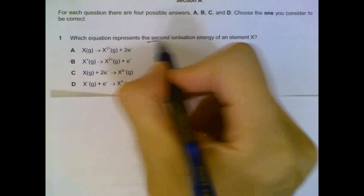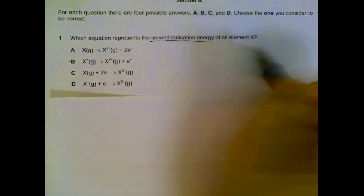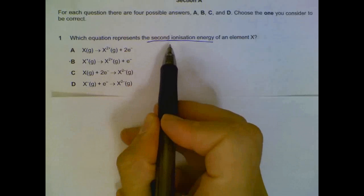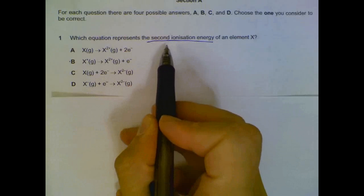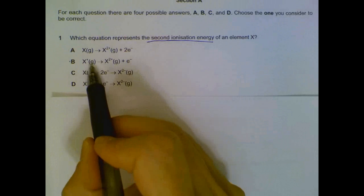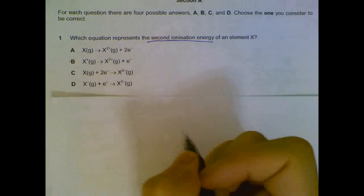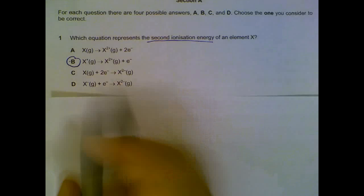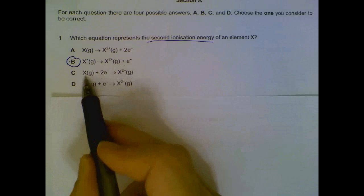Second ionization energy is the removal of one mole of electrons from one mole of a positively charged ion, forming a 2+ charge, so it's B. Do not confuse it with C — C is actually the first ionization energy plus the second ionization energy in total.